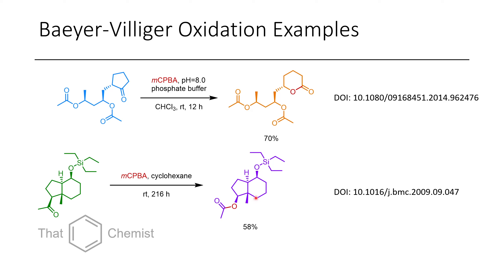So from these trends, the migratory aptitude is well established. If you don't believe it, you can search Reaxys or SciFinder, where thousands of reactions show the same trends. I haven't picked examples with two secondary or two tertiary positions, because those can be competitive. But if you have different substituents adjacent to your carbonyl, you'll usually get really good selectivity for one product. If you don't, try changing your peracid for more predictable outcomes.